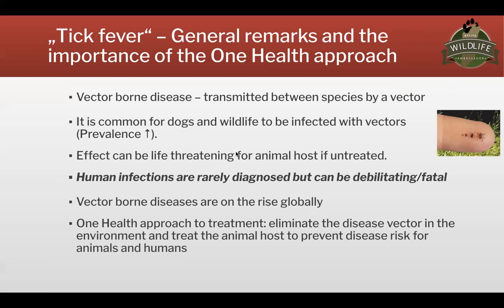Ticks are very commonly found on dogs and wildlife, so the prevalence of vectors is very high. The disease can be life-threatening for the animal host if not treated. And even in humans, while infections are very rarely diagnosed and much smaller in numbers than in animals, they can be debilitating and even fatal. Globally, vector-borne diseases are on the rise. The One Health approach here is that we can more easily eliminate the disease vector — the ticks in the environment — and treat the animal host to prevent this disease risk for both animals as well as humans.